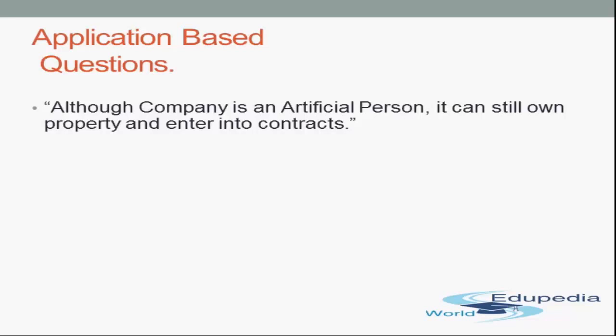Since the company is an artificial person, it cannot breathe, it cannot sleep, it cannot talk. But still, it can own property and enter into contracts. Both statements are correct. You have to write clearly: it is true that a company is an artificial person as it is created by law. However, like a natural person, a company can also own property and enter into contracts but through its Board of Directors. The Board of Directors enters into agreements with others and indicates the company's approval through a common seal. That is the correct answer — nothing more, nothing less.